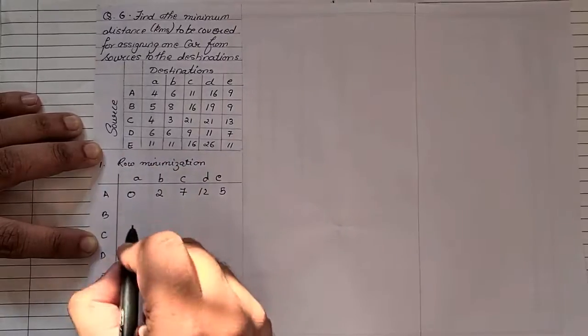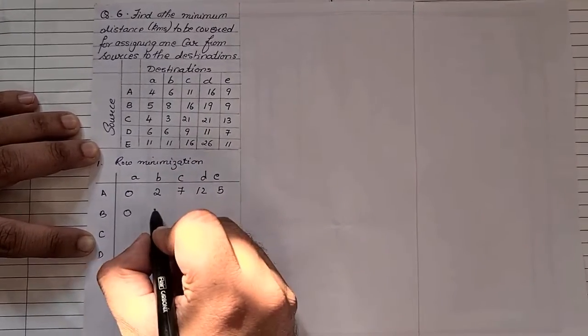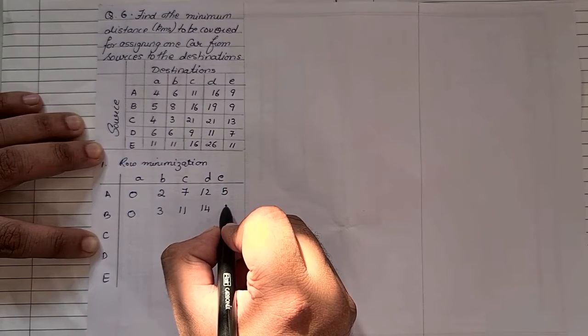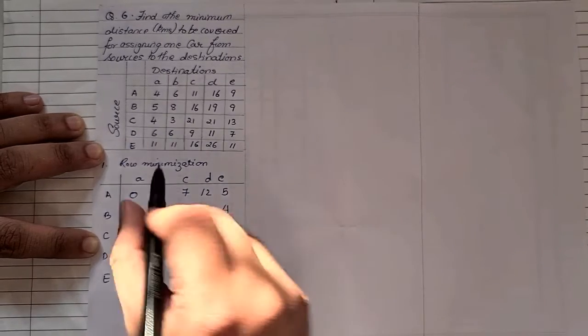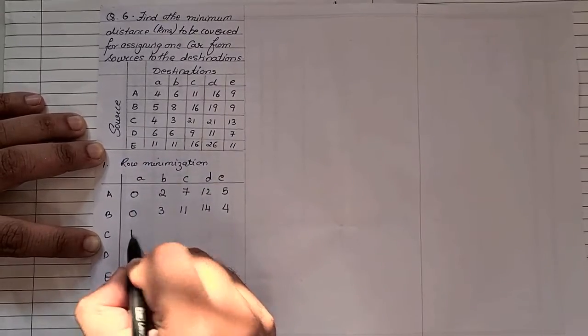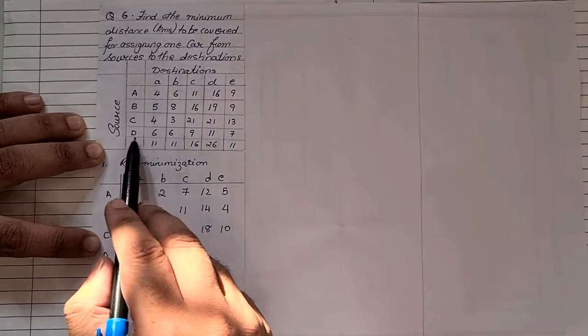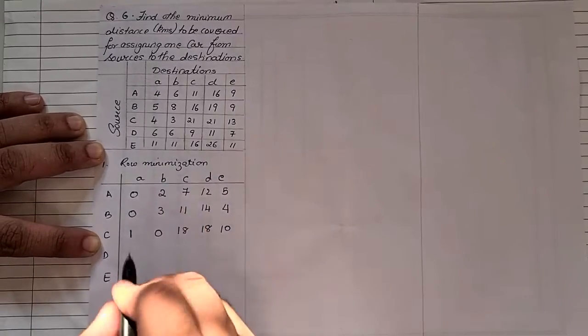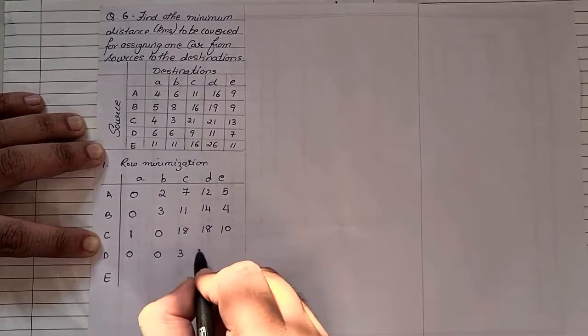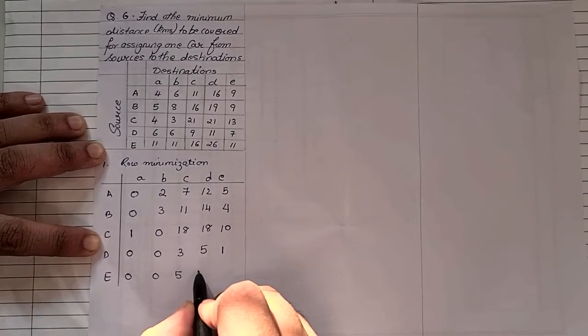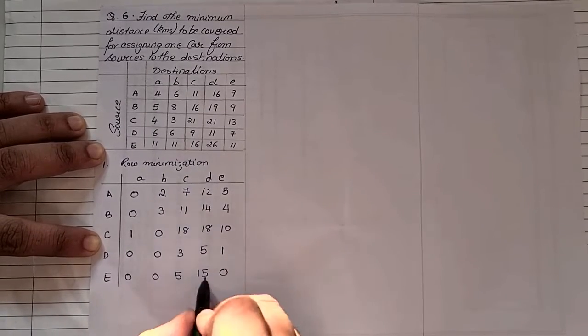In row B, the lowest value is five. So five minus five is zero, eight minus five is three, sixteen minus five is eleven, fourteen minus five is nine, and nine minus five is four. In the third row the lowest is three, giving values one, zero, eighteen, eighteen, and ten. In the fourth row the lowest value is six, giving zero, zero, three, three, five, and one. In the last row, eleven is the smallest value, giving zero, zero, five, fifteen, and zero. That completes step number one — row minimization.